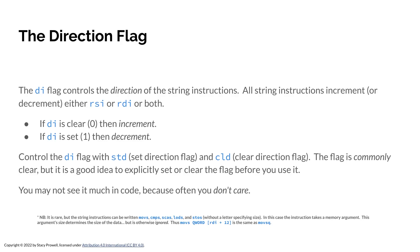The basic idea: if the direction flag is clear, you'll increment each time; if it's set, you'll decrement each time. To set the direction flag, use STD. To clear it, use CLD. The flag is commonly clear, so you're incrementing. But if you want to use this, it's probably a good idea to set or clear the flag appropriately before you use it. If you don't know it's set to decrement and you set things up starting at the beginning of your data, you're immediately walking backwards into other data and corrupting it. Checking the flag is a good idea.